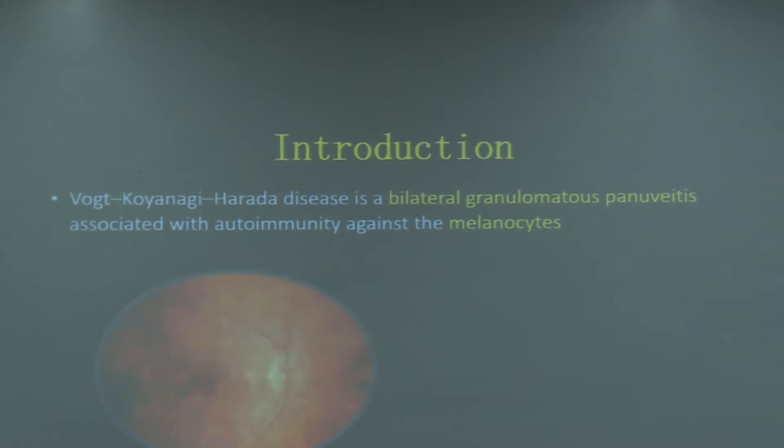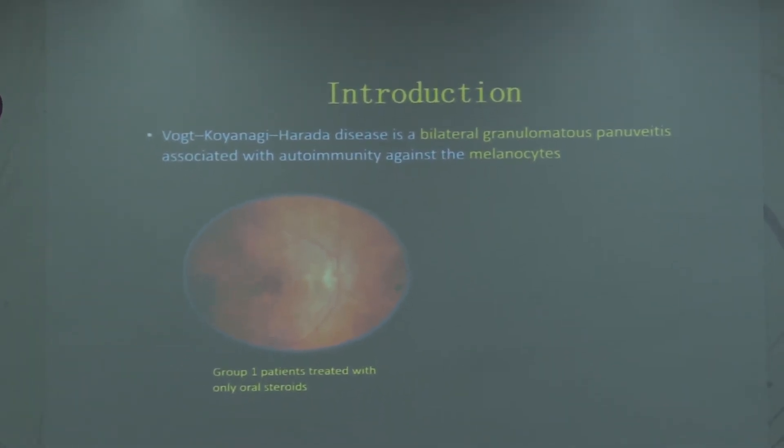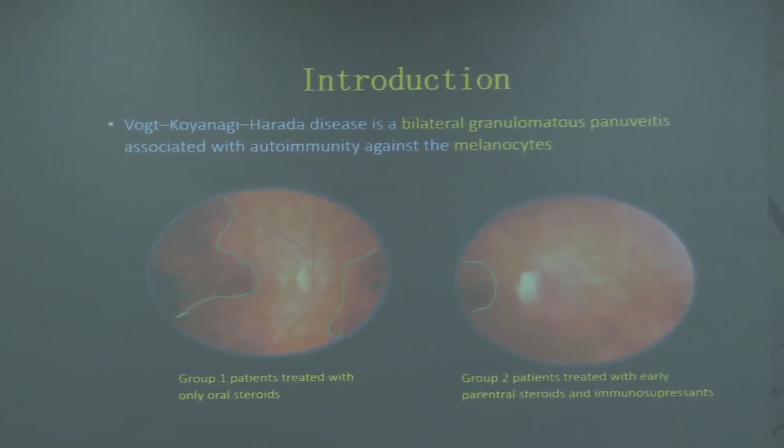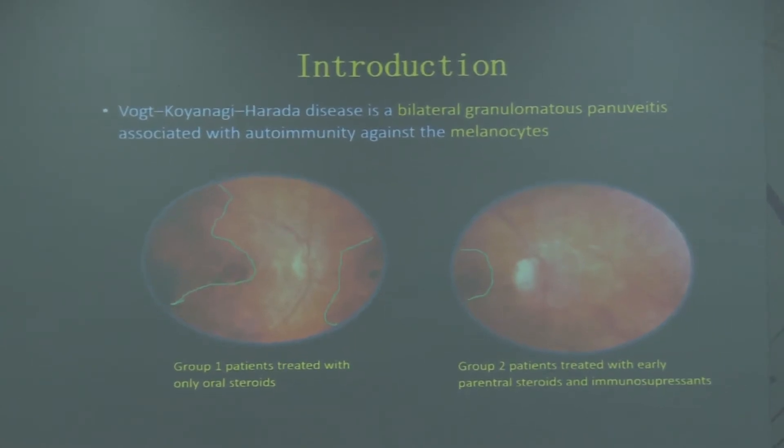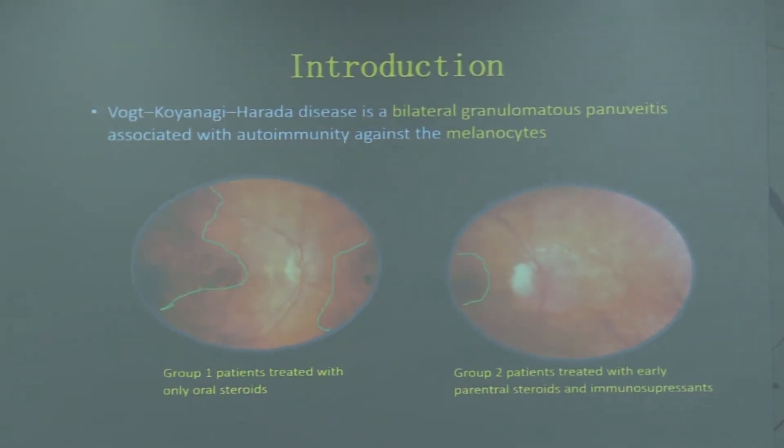Talking about our study, in Group 1 patients were treated with only oral steroids, and Group 2 were treated with early parenteral steroids and immunosuppressants. As we can see, the RP degeneration and peripapillary atrophy were much more in Group 1 patients as compared to Group 2 patients.